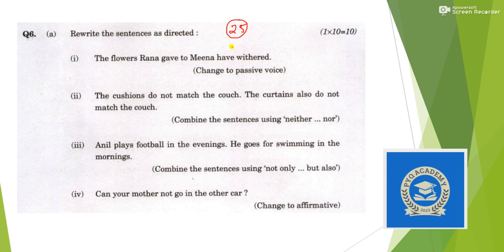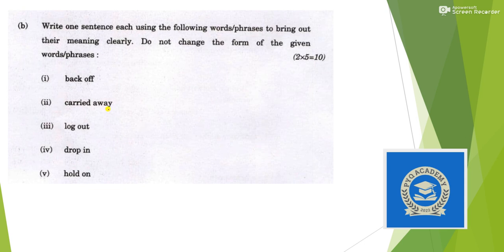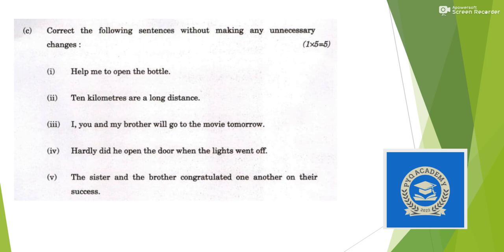Question 6 is the grammar section, worth 25 marks. It is divided into three sub-sections. The first requires rewriting sentences as directed — for example, changing active voice to passive, or using 'neither...nor.' The second section provides phrases or words and asks you to make sentences, with each sentence fetching 2 marks. The third section requires you to find mistakes in sentences and rewrite them correctly.